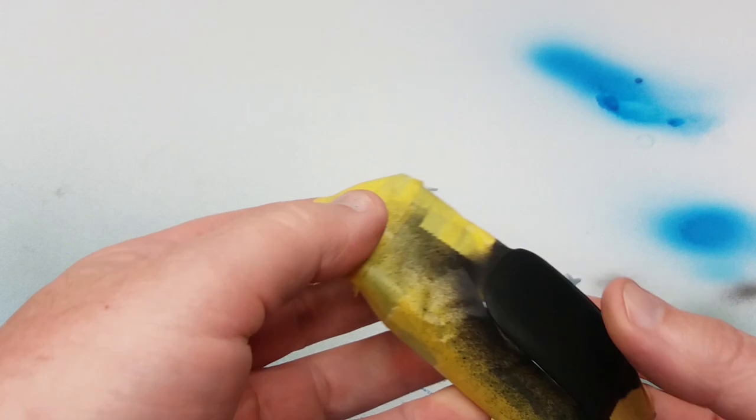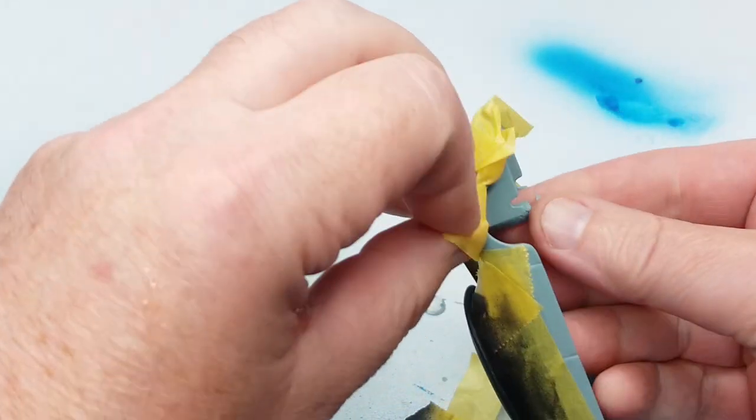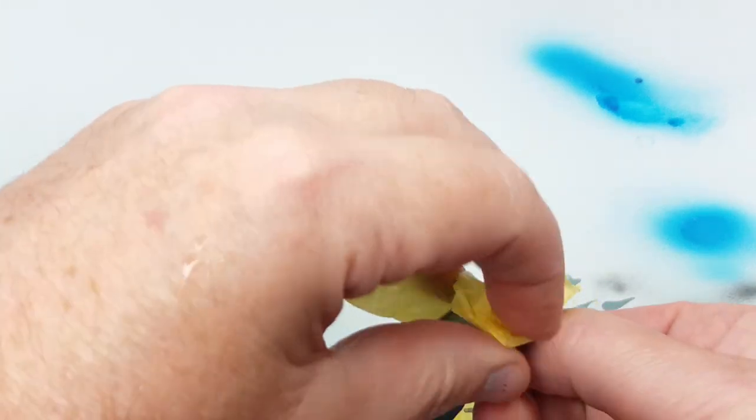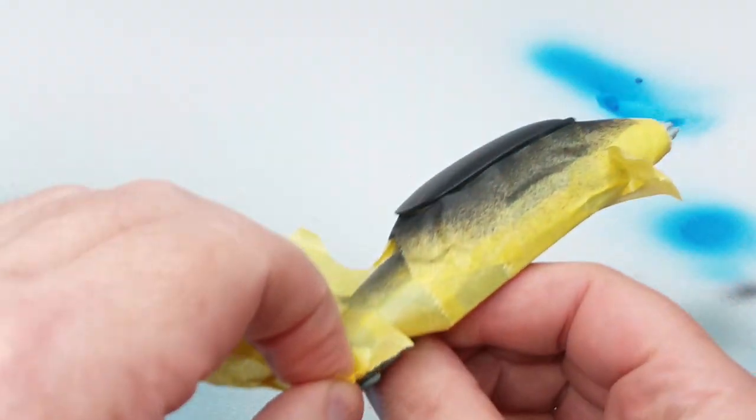Now this Tamiya tape is very good for sticking to surfaces and then coming off without lifting the paint usually and it's also very good for not bleeding under the tape as long as you're careful, as long as you don't do anything silly with it, it's actually pretty good.